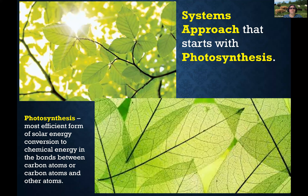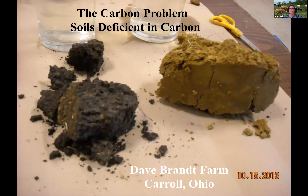Photosynthesis is the most efficient form of solar energy conversion to chemical energy. It holds that energy in the bonds between carbon atoms and other atoms, giving us those green leaves that are essential to all life on this planet. The carbon for almost every organism on the planet comes directly or indirectly from this photosynthetic activity. This photosynthetic activity is enhanced by the relationship with the microbial community, which gives the plant better access to nutrients. Focusing on the fact that we have a carbon problem — soils deficient in carbon — what we can do is change this in a relatively short period of time.